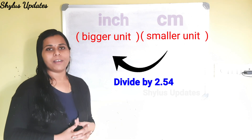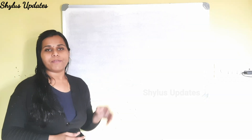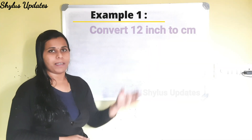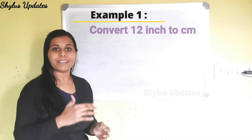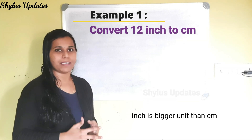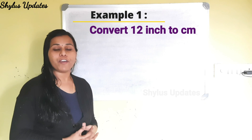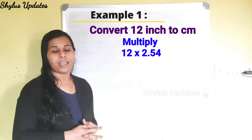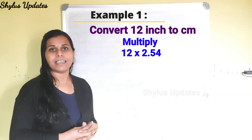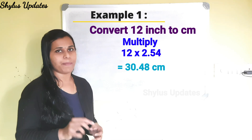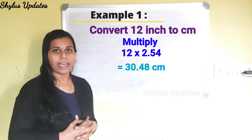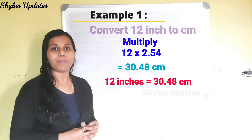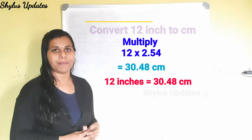Let's try this also. First example: convert 12 inch to centimeter. Inch is a bigger unit when compared to centimeter. Therefore, multiply 12 × 2.54. You will get 30.48 centimeter. So, 12 inches is equal to 30.48 centimeter.